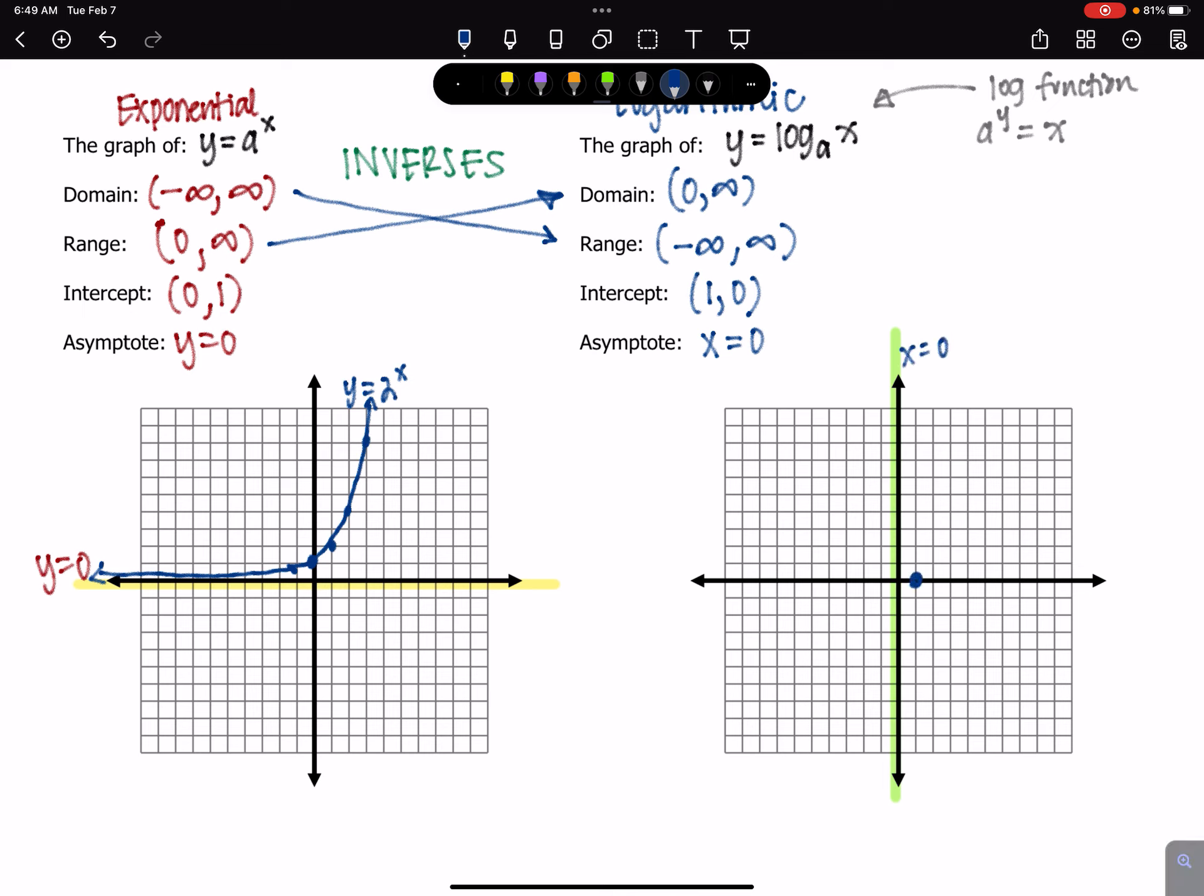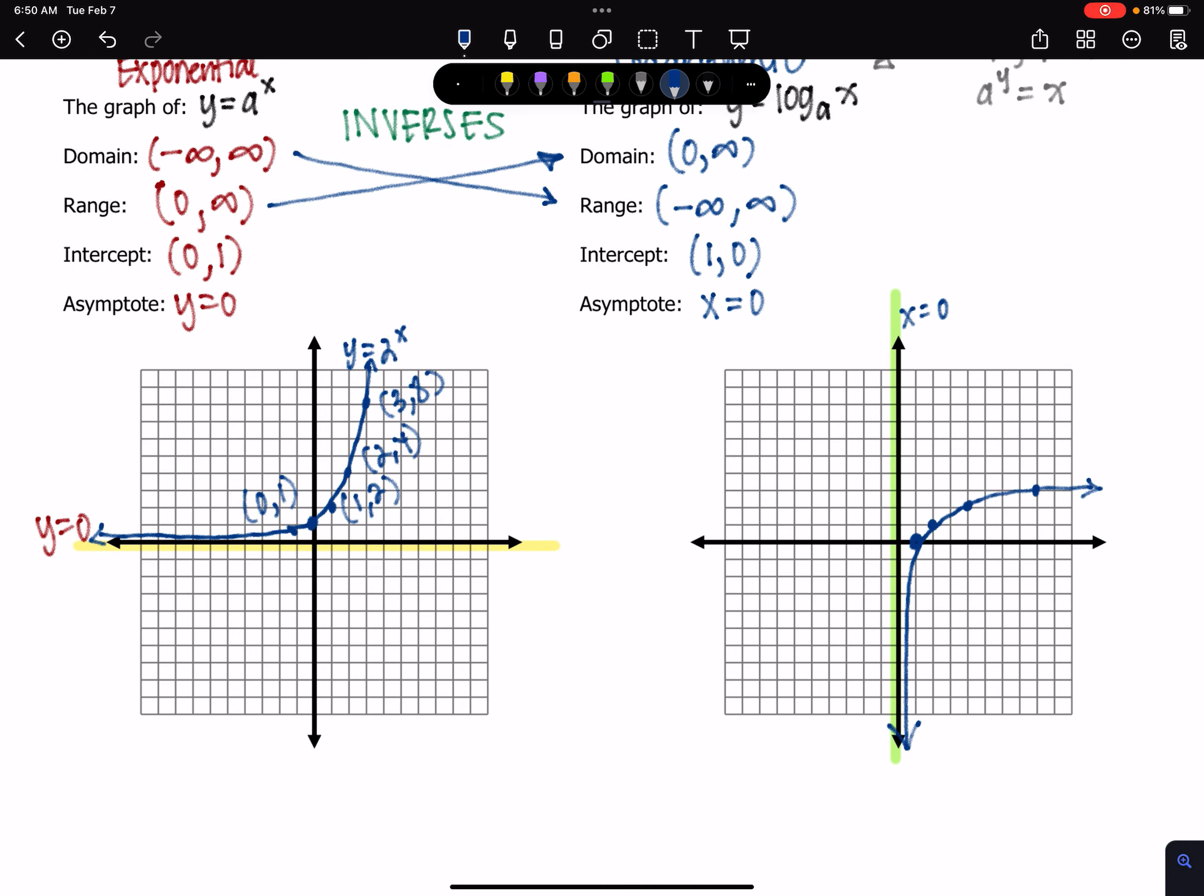So our logarithmic function is going to take each one of these ordered pairs. We've got 0, 1, 1, 2, 2, 4, 3, 8. And it's going to reverse all the x's and y's. So 1, 0, 2, 1, 4, 2, 8, 3. And then it approaches that vertical asymptote. Just hugs it all the way down to negative infinity. So that's our two functions right there.